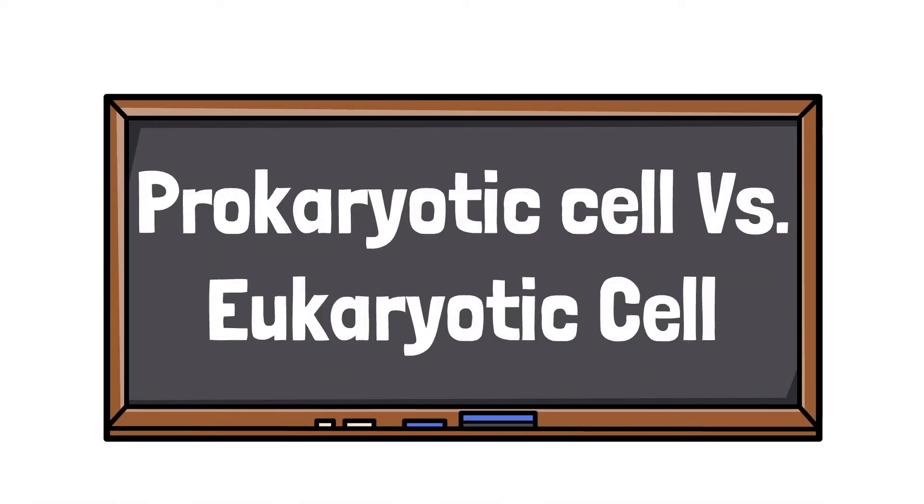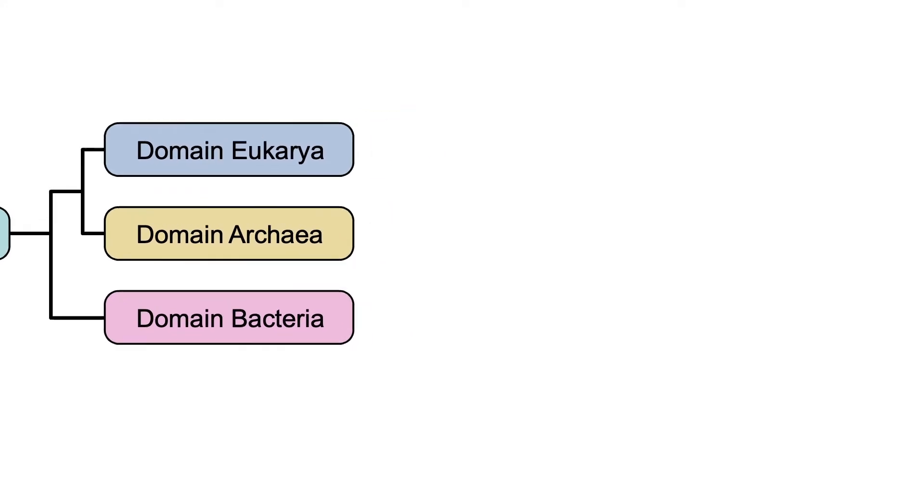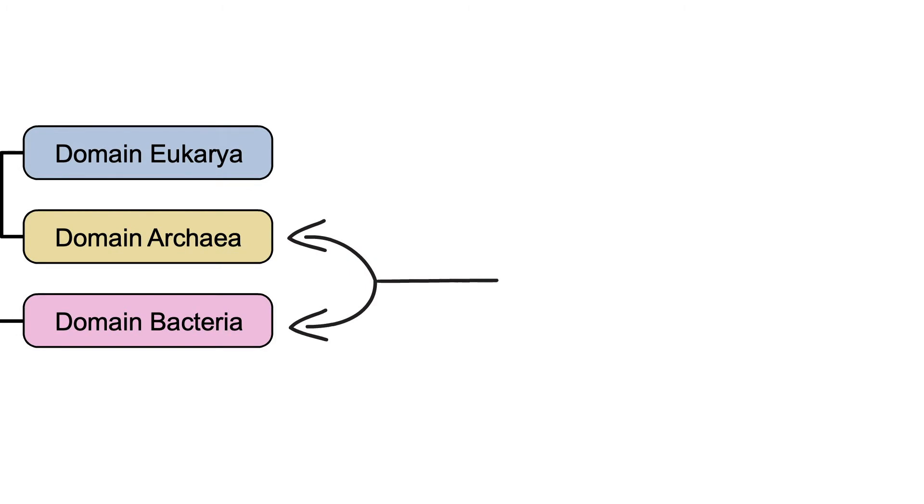Prokaryotic cell versus eukaryotic cell. There are three domains of life: bacteria, archaea, and eukarya. Among these domains, bacteria and archaea are called prokaryotes.